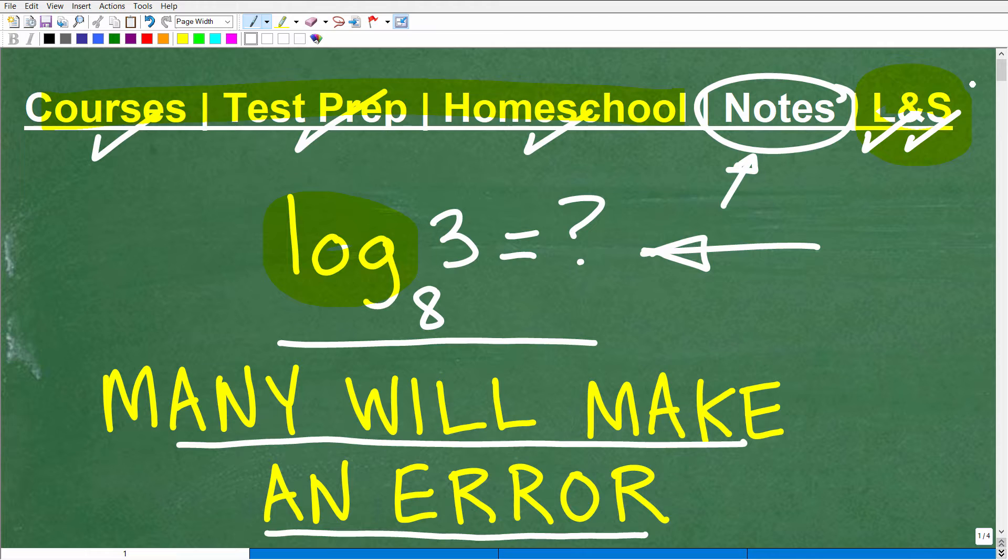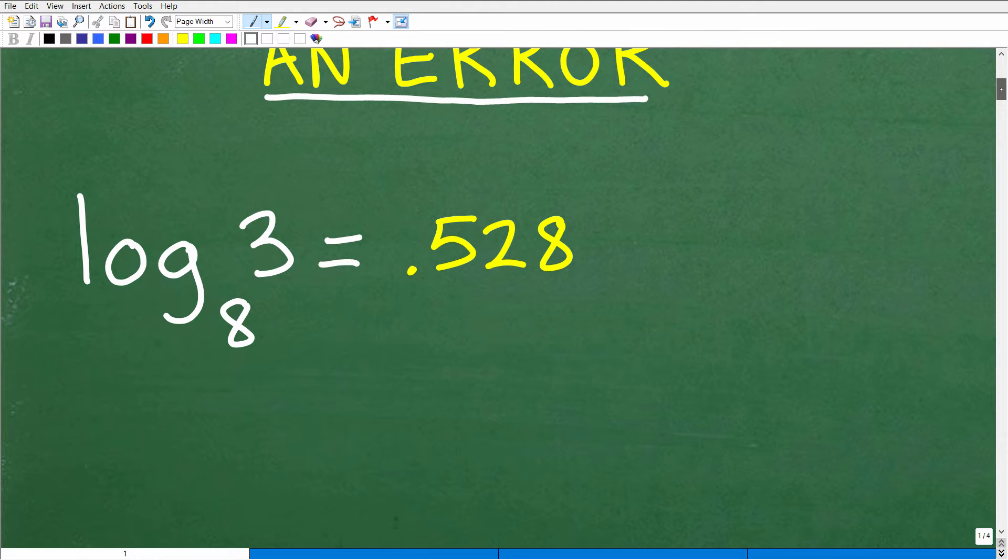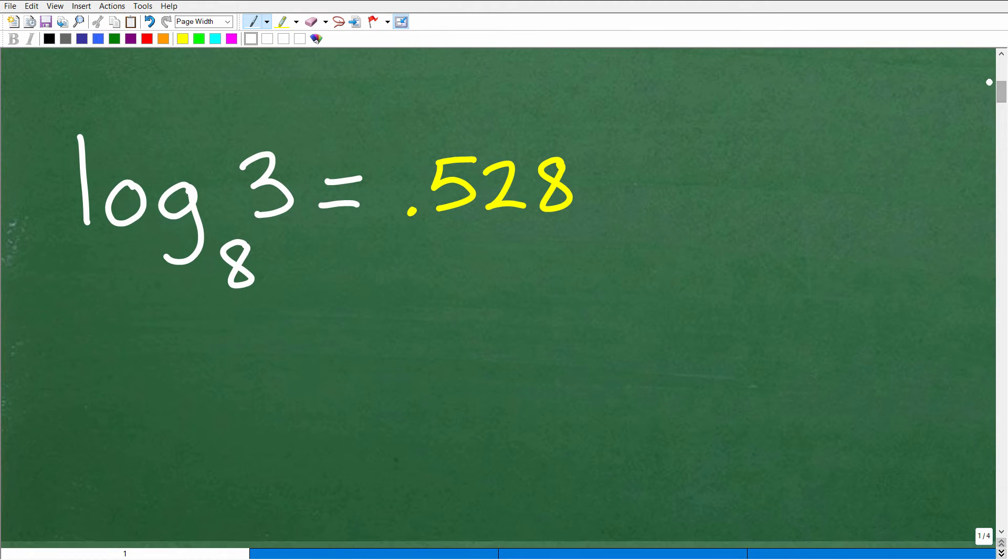Okay, so what we have here is log base 8 of 3. We want to figure this out, and we're going to need our calculator. So let's go ahead and take a look at the answer, and then you can kind of determine whether you got this thing right or wrong if you attempted it. The answer is log base 8 of 3, or log of 3 base 8 is 0.528.